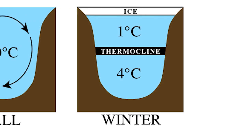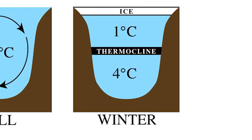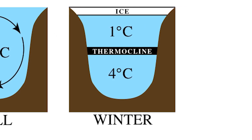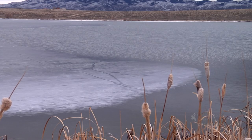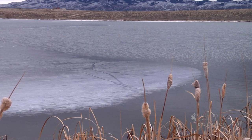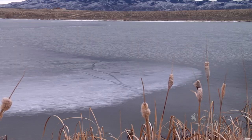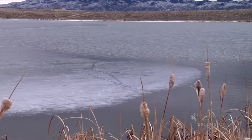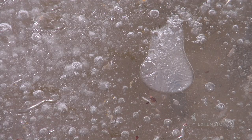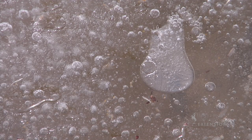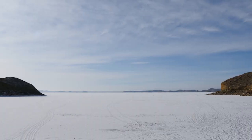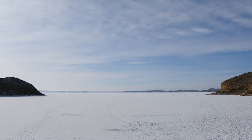As winter sets in, ice covers a lake. Ice is very low density, which is why it floats. The winter temperature stratification results in the coldest water on the top of the lake, just below the frozen ice, and a slightly warmer layer deeper in the lake.